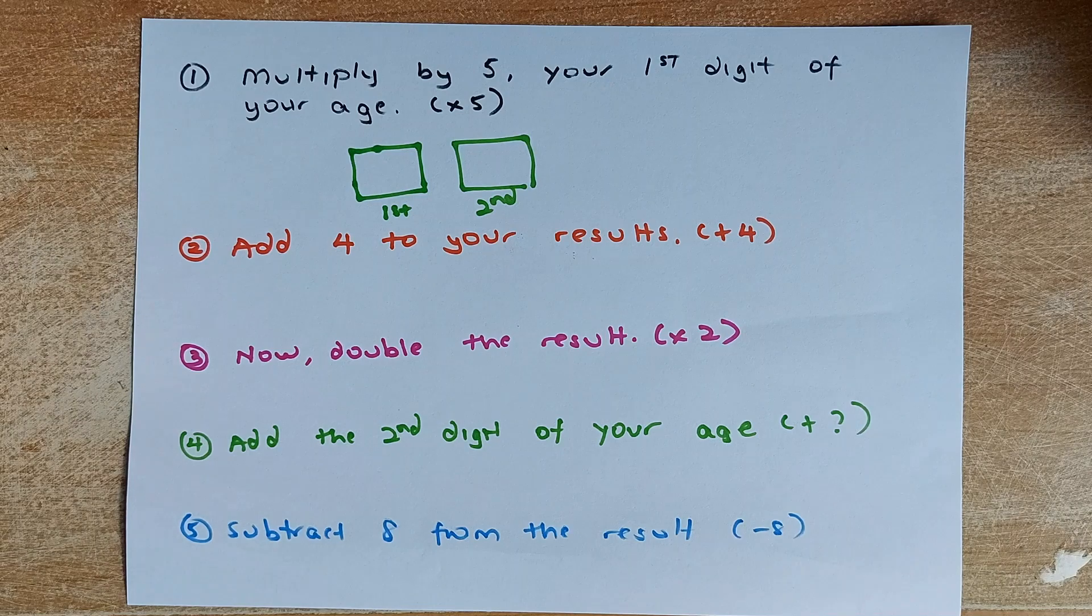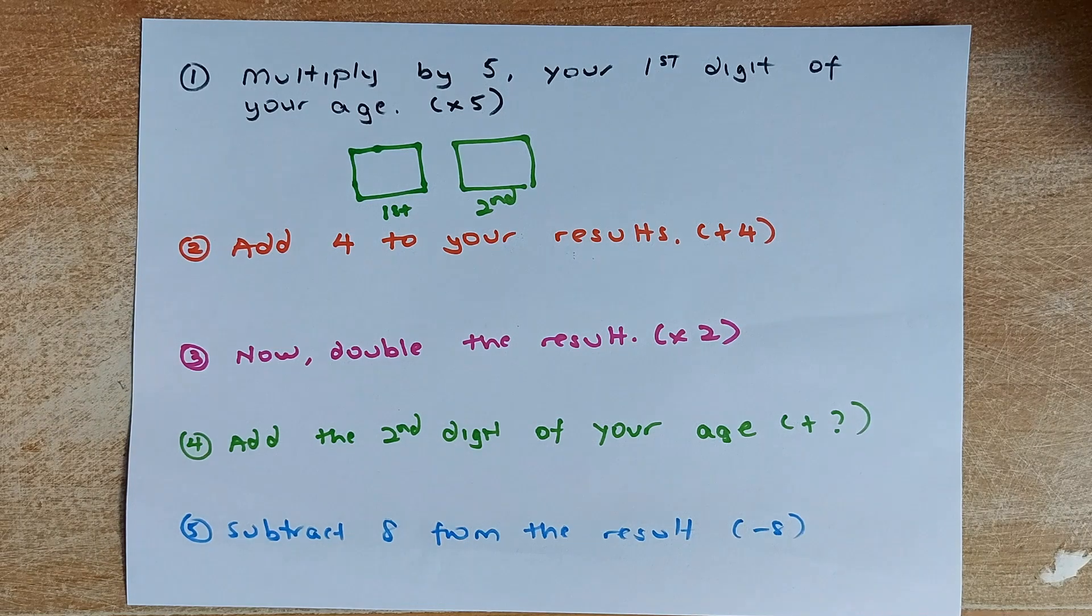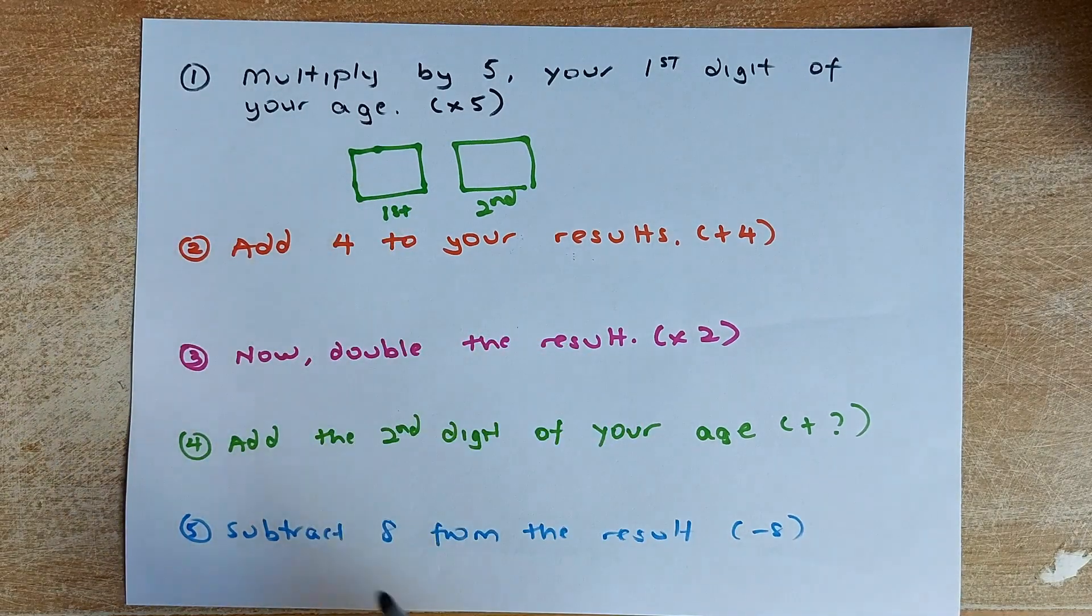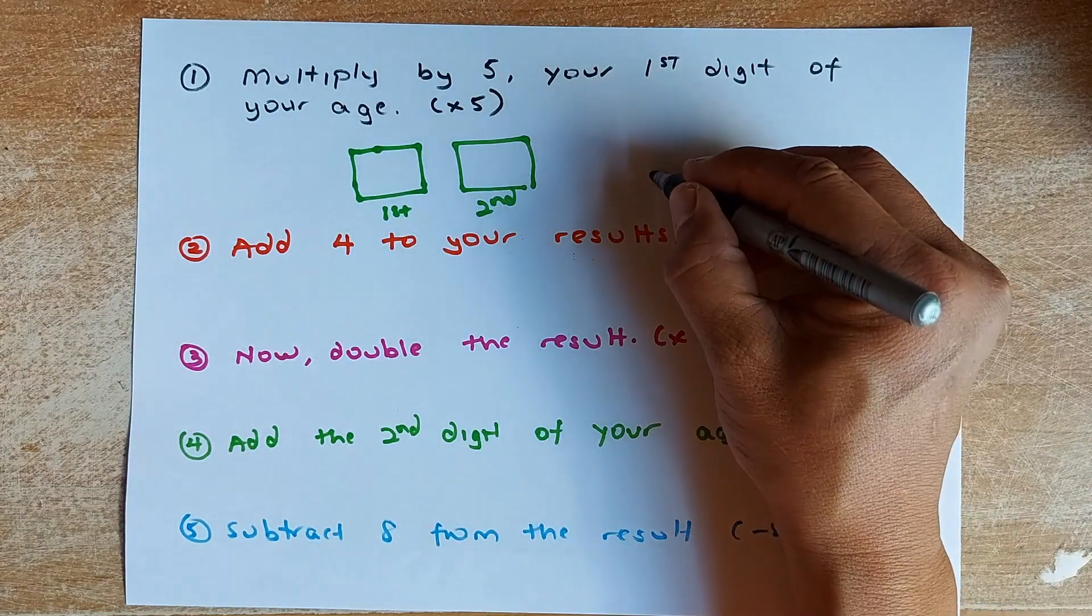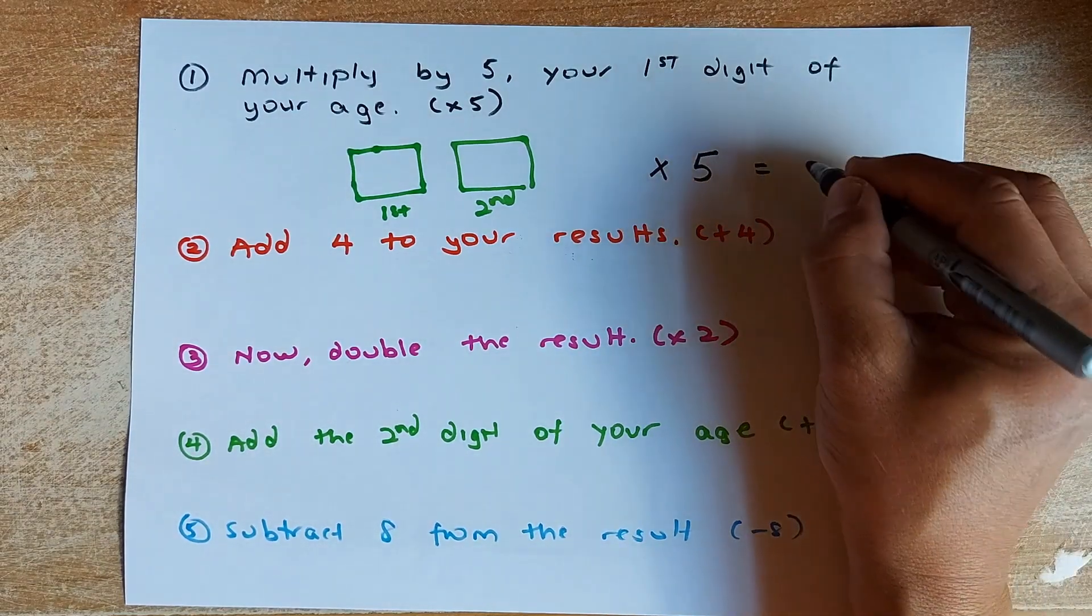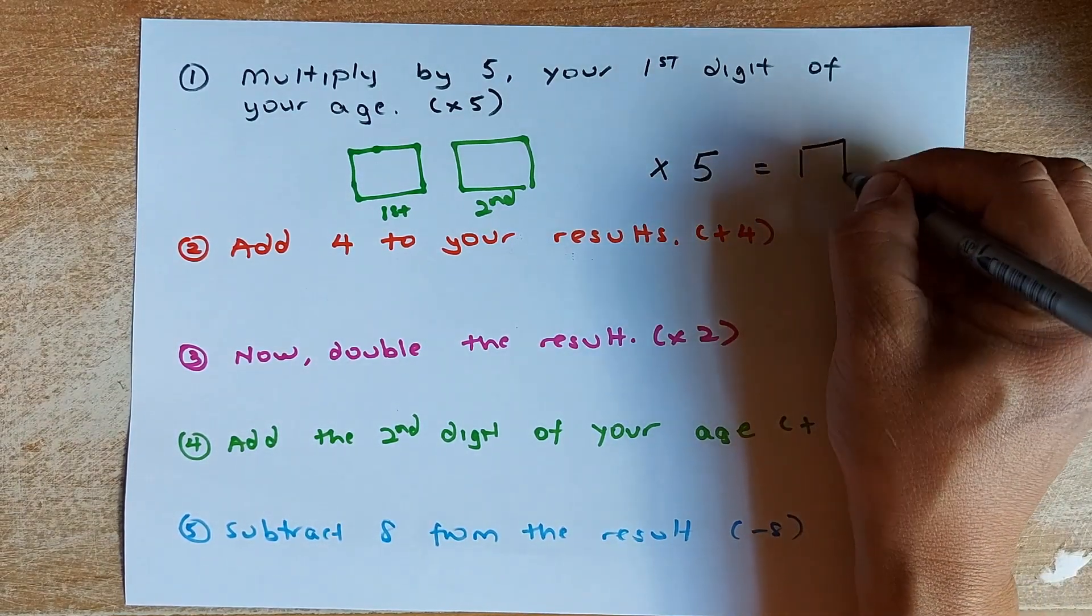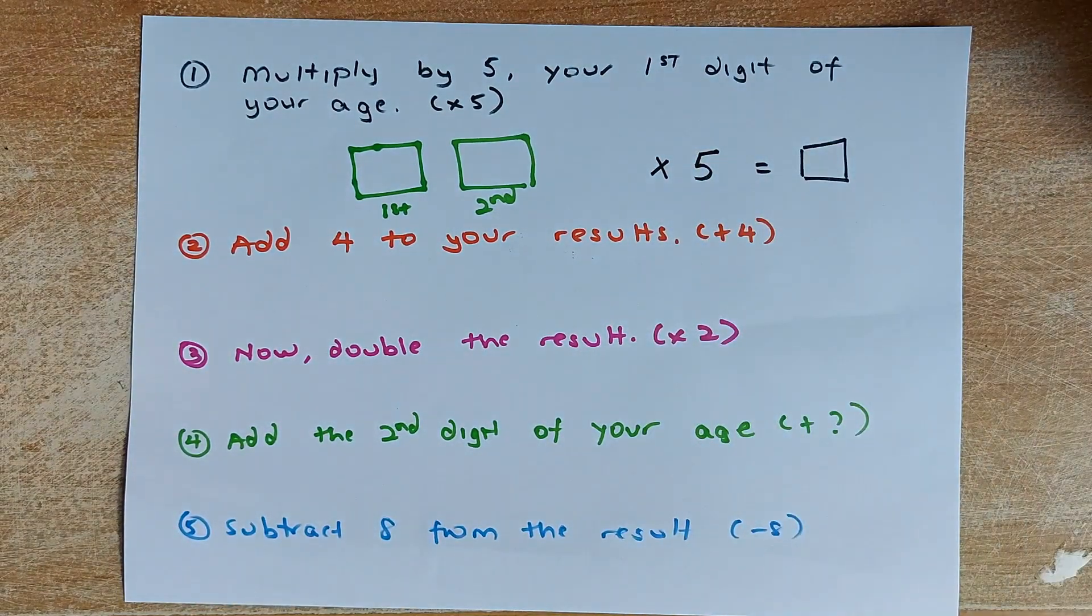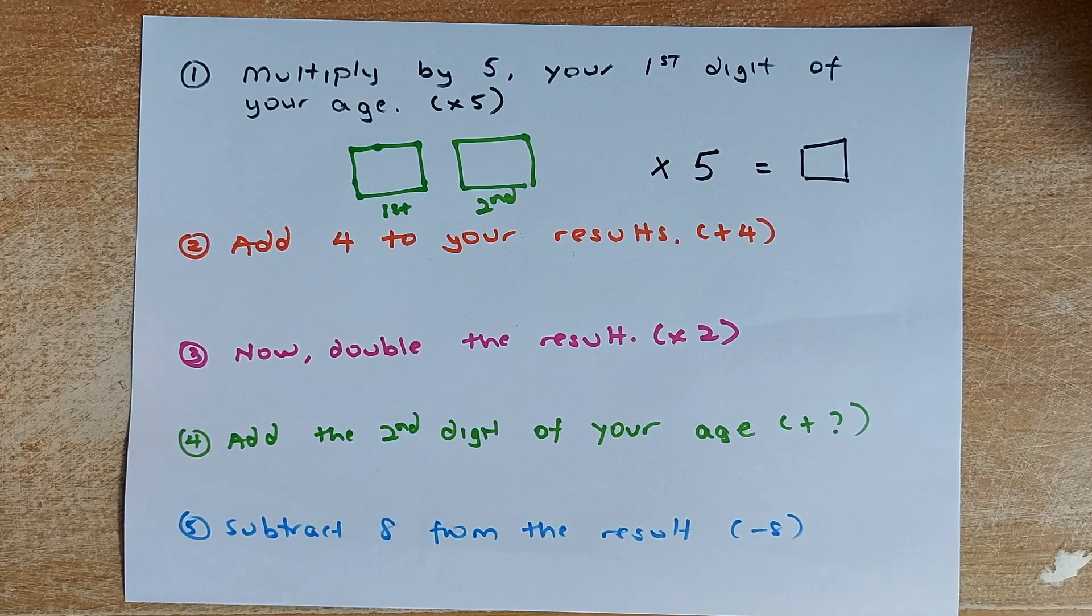Once you have started that, you are going to start your calculation. So you take the first digit. You need to multiply by 5. And that will give you your first answer, the black box. Everyone got it so far? Good.